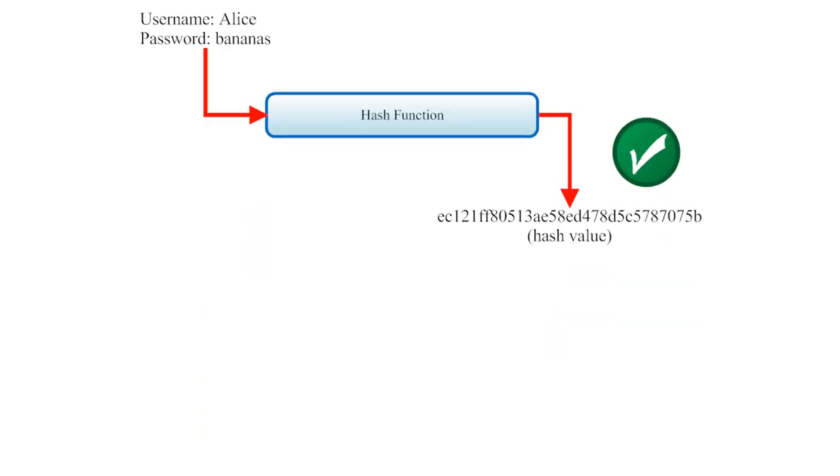companies like your bank use a special mathematical function called a hash function to encrypt passwords before storing them on their servers. A hash function converts a string of letters, numbers, and symbols into a completely different string called a hash value. As you can see from this illustration, a hash value looks nothing like the original password.